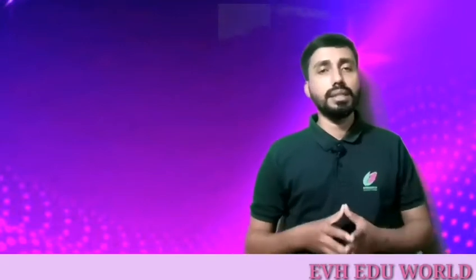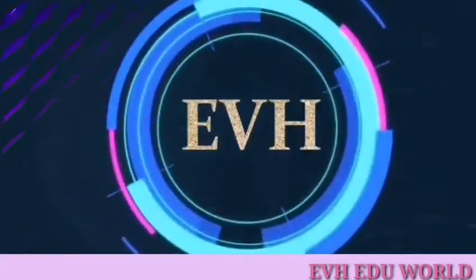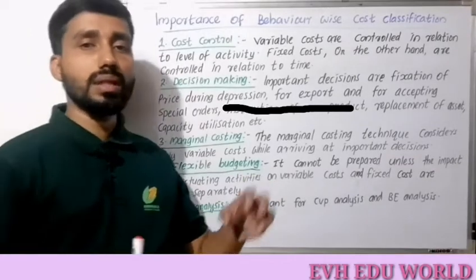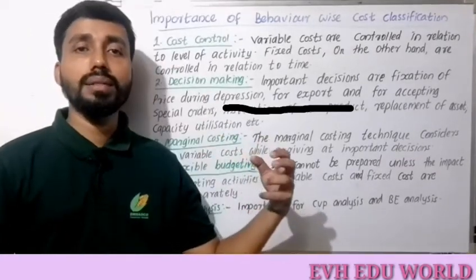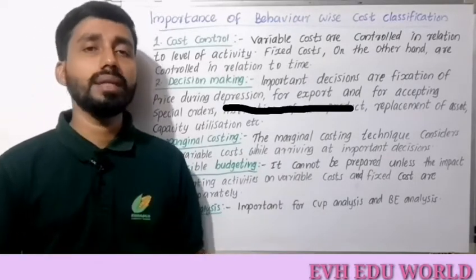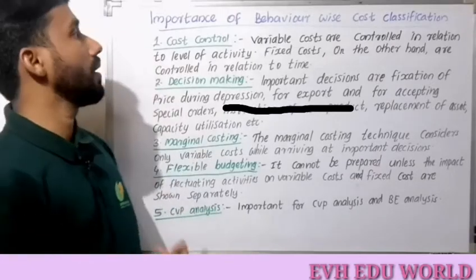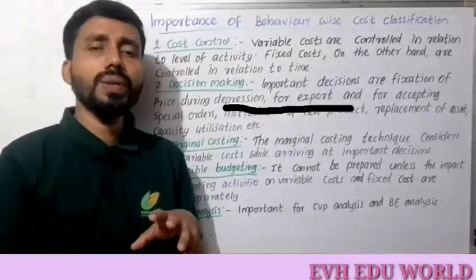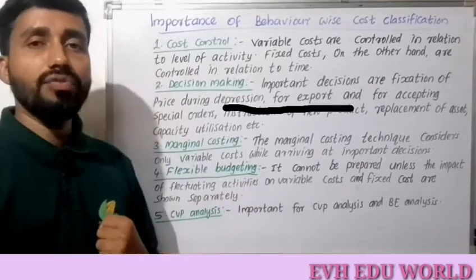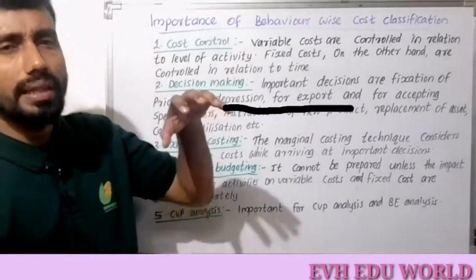Cost Accounting covers the importance of behavioral-based cost classification. This area is called Cost Classification based on Behavior, also referred to as Fixed and Variable Behavior. We are interested in this class because of cost control, which relies on classification based on behavior — specifically fixed and variable costs.